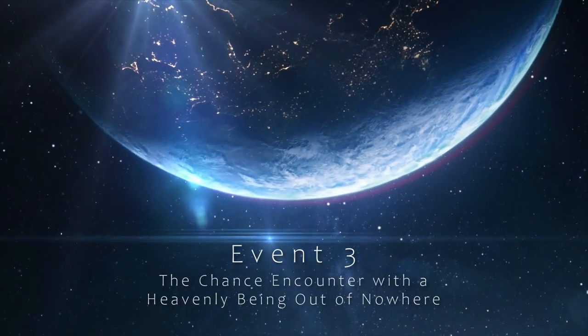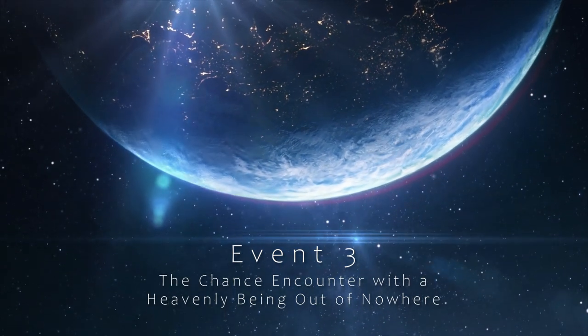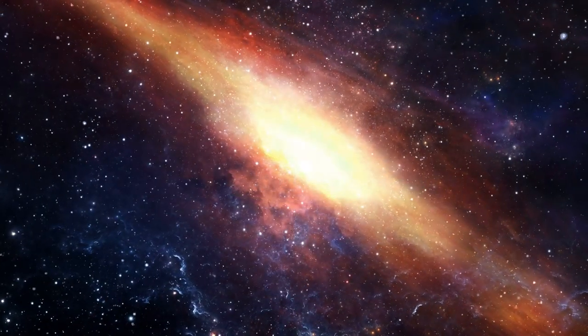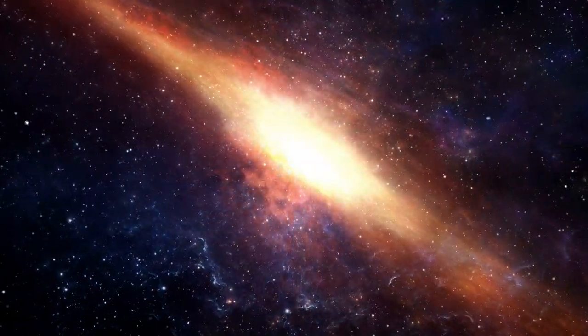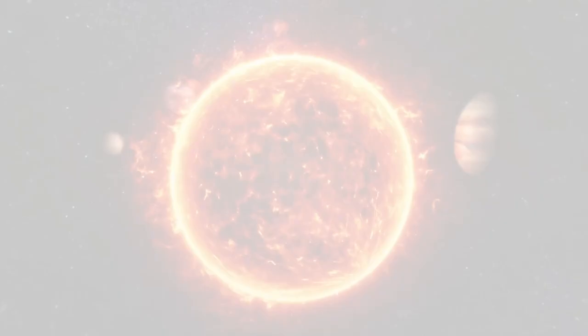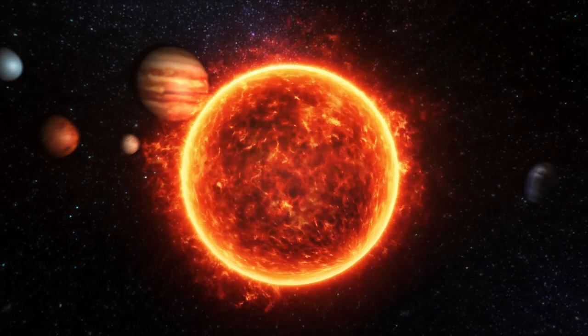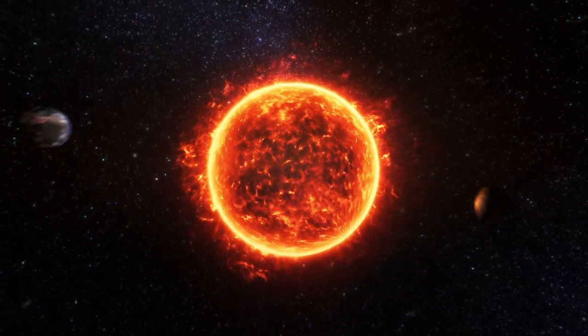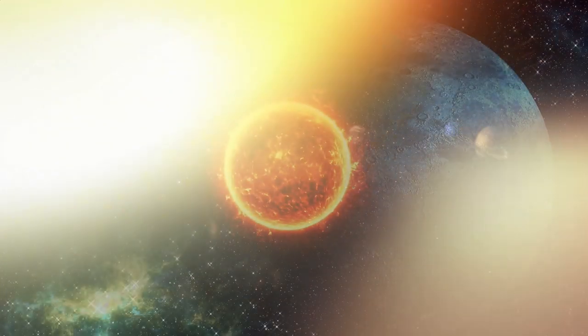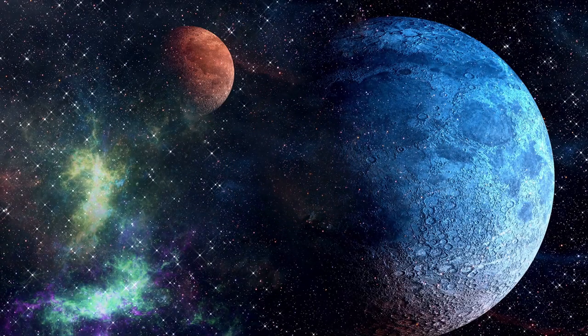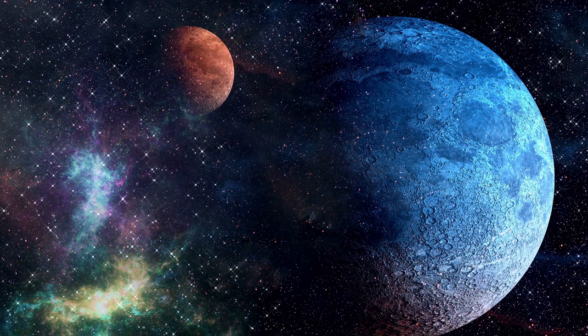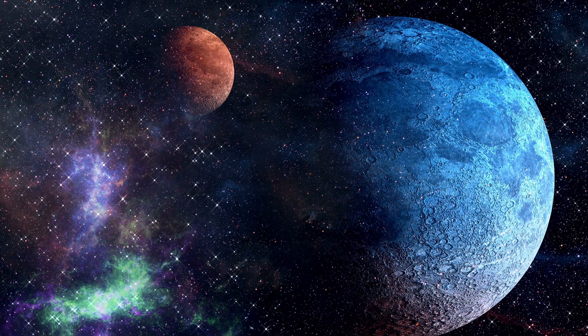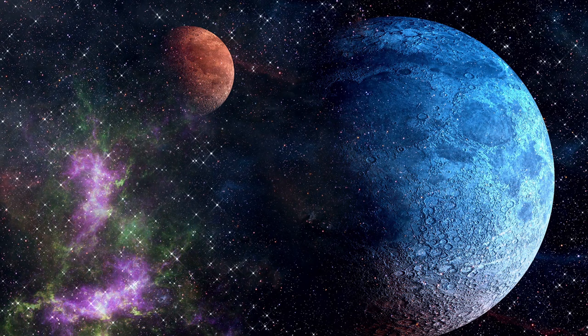Event 3: The chance encounter with the heavenly being out of nowhere. The galaxy we live in is a big space filled with many different kinds of stars, planets, black holes, and other things. Our solar system, which is made up of the sun and the planets that orbit it, has been around for about 4.5 billion years. Think about what would happen if an alien star unexpectedly came close to our solar system and came dangerously close to one of the planets. This is a very unlikely thing to happen, with only about one chance in 10,000 that it will.